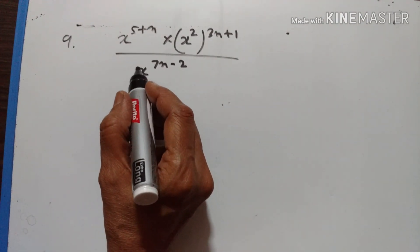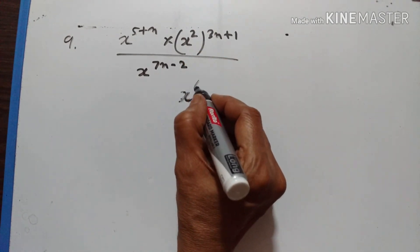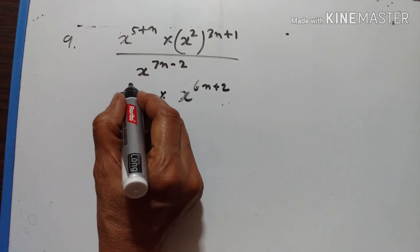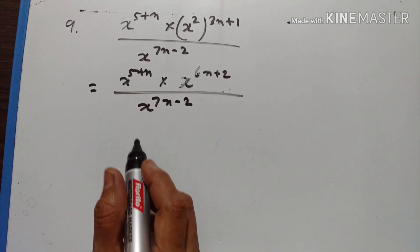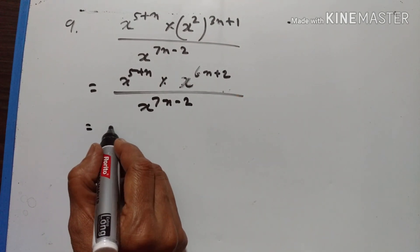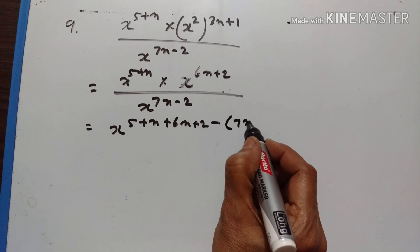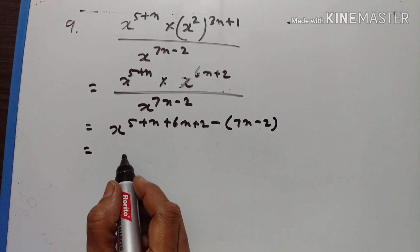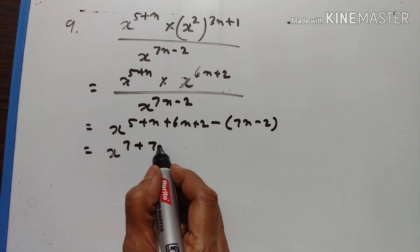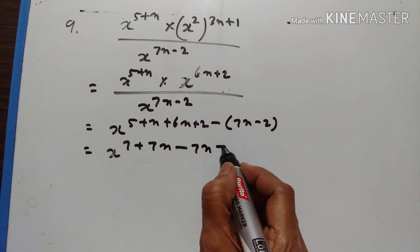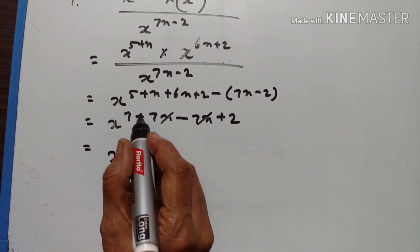We have to evaluate this. Let us solve this first: x raised to the power of 2 into 3n plus 1 — 2 times 3 is 6, so 6n plus 2 — into x raised to the power of 5 plus n, upon x raised to the power of 7n minus 2. Now we have to add these powers: x raised to the power of 5 plus n plus 6n plus 2, minus 7n minus 2. 5 plus 2 is equal to 7, 7 plus 6n plus n is 7n, minus 7n cancel off. Plus 7n and minus 7n go off: x raised to the power of 7 plus 2 is equal to x to the power of 9.